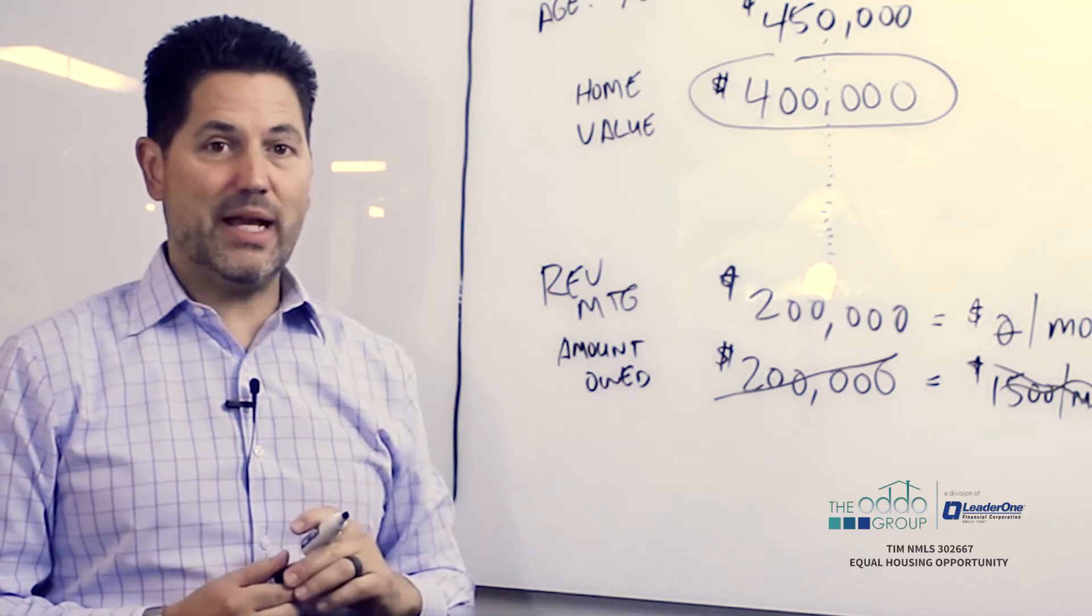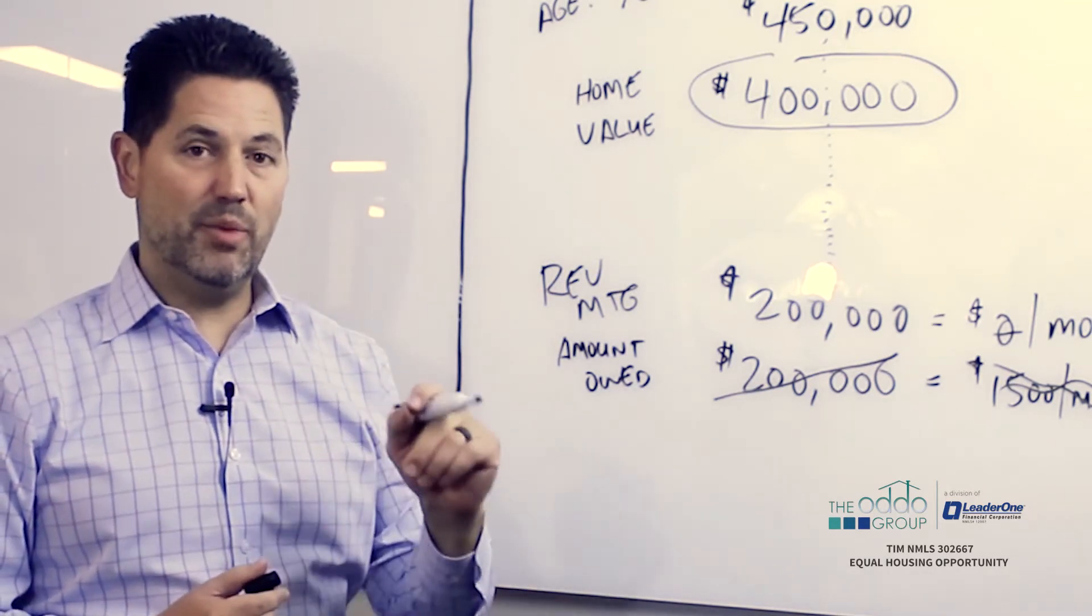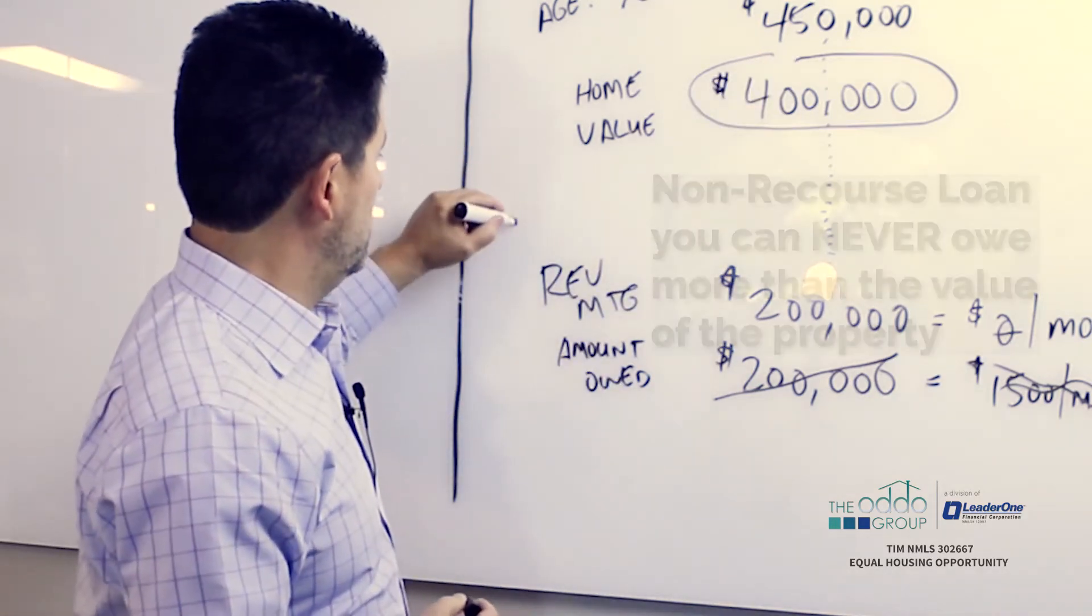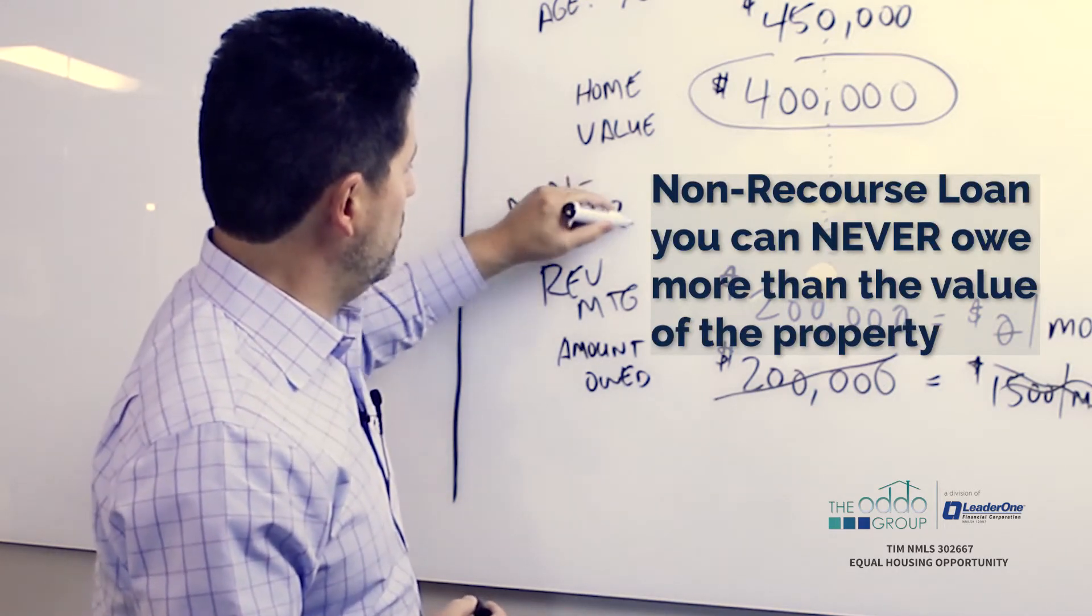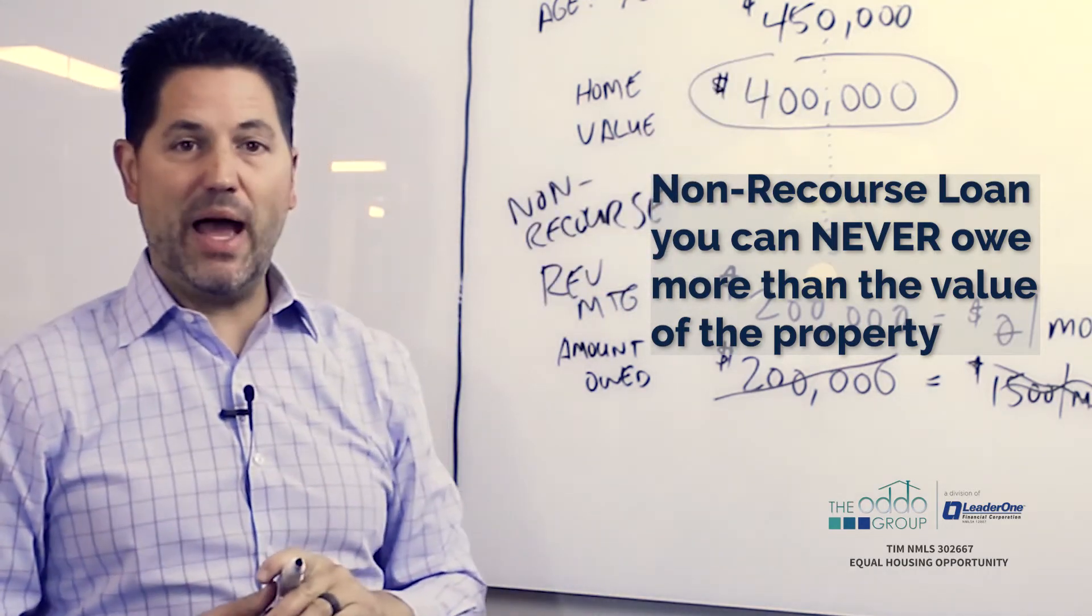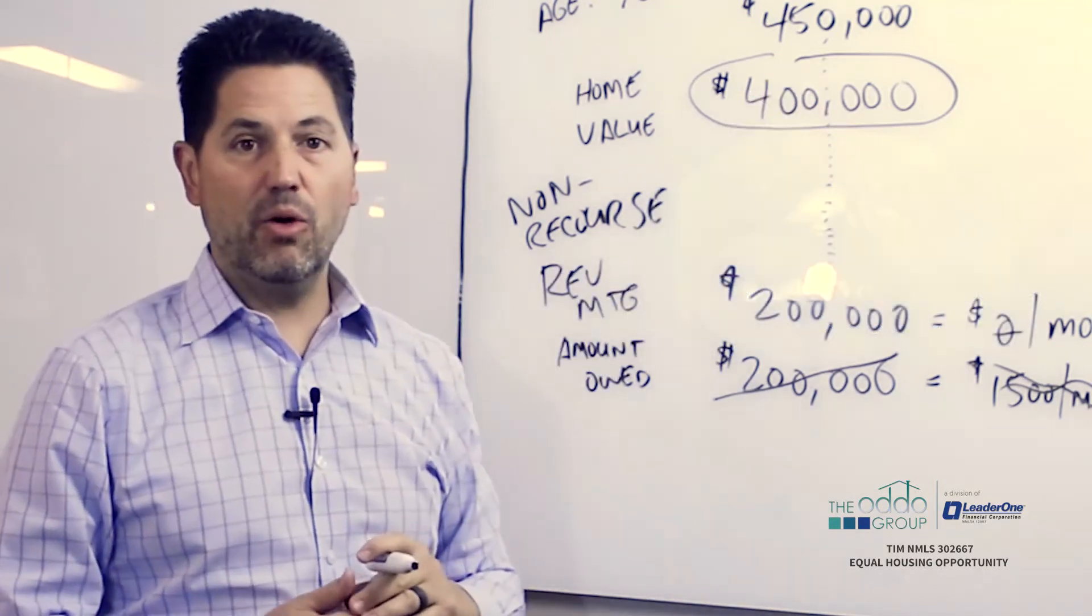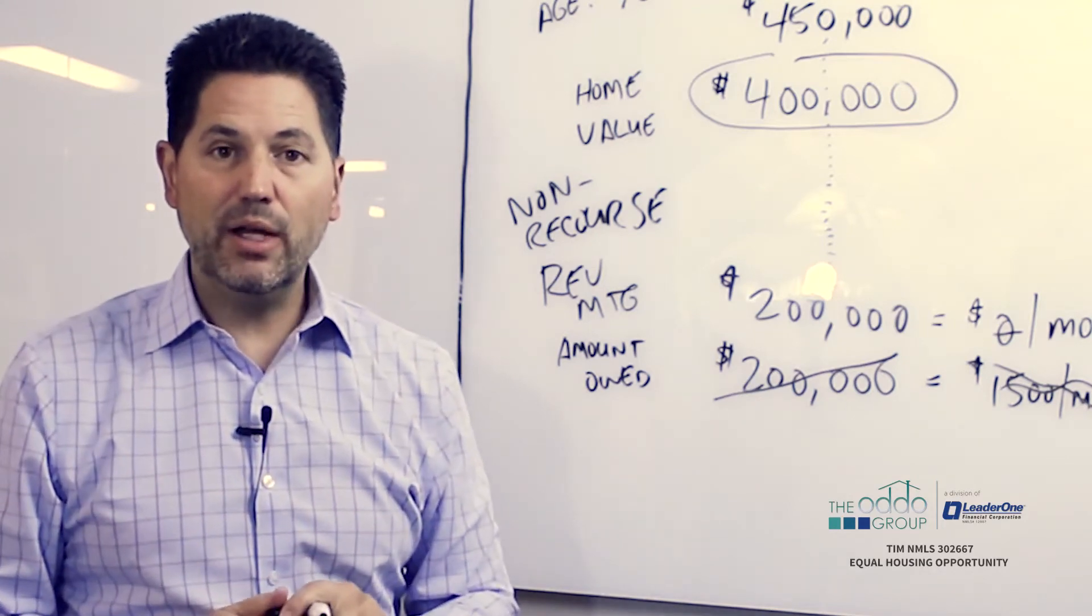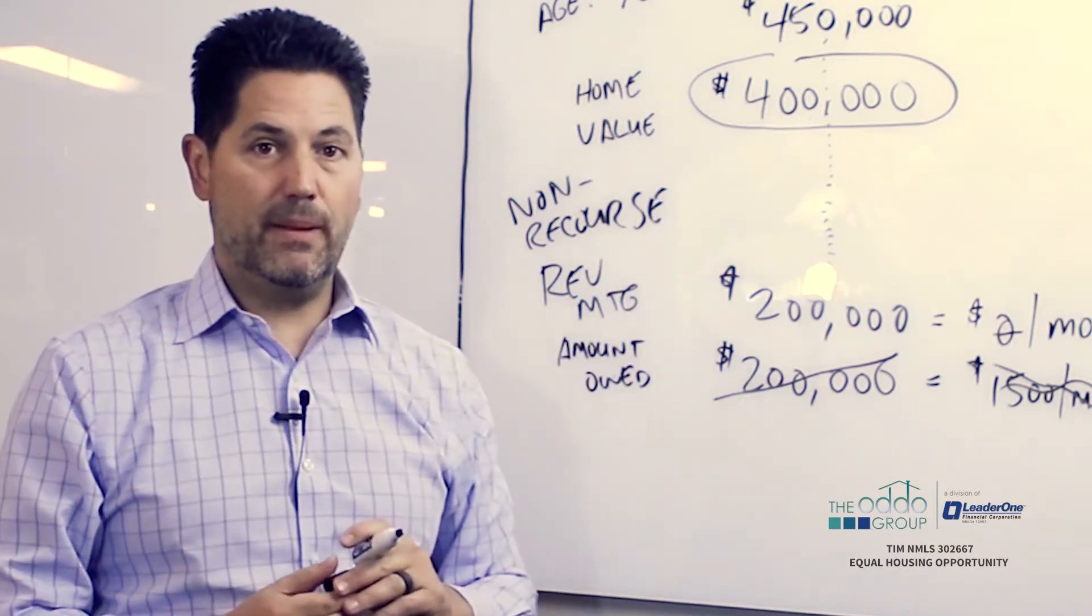In the case of a reverse mortgage, that's not a problem because a HECM reverse mortgage, a government-insured loan, is a non-recourse loan. Non-recourse means you can never owe more than the value of the property. So if mom and dad live in there and they pass away and they're 100 years old and they owe more than the value of the home, literally the kids will still get the house. The kids can give the keys back to the lender and walk away and they don't owe one nickel above the value of the home, period.